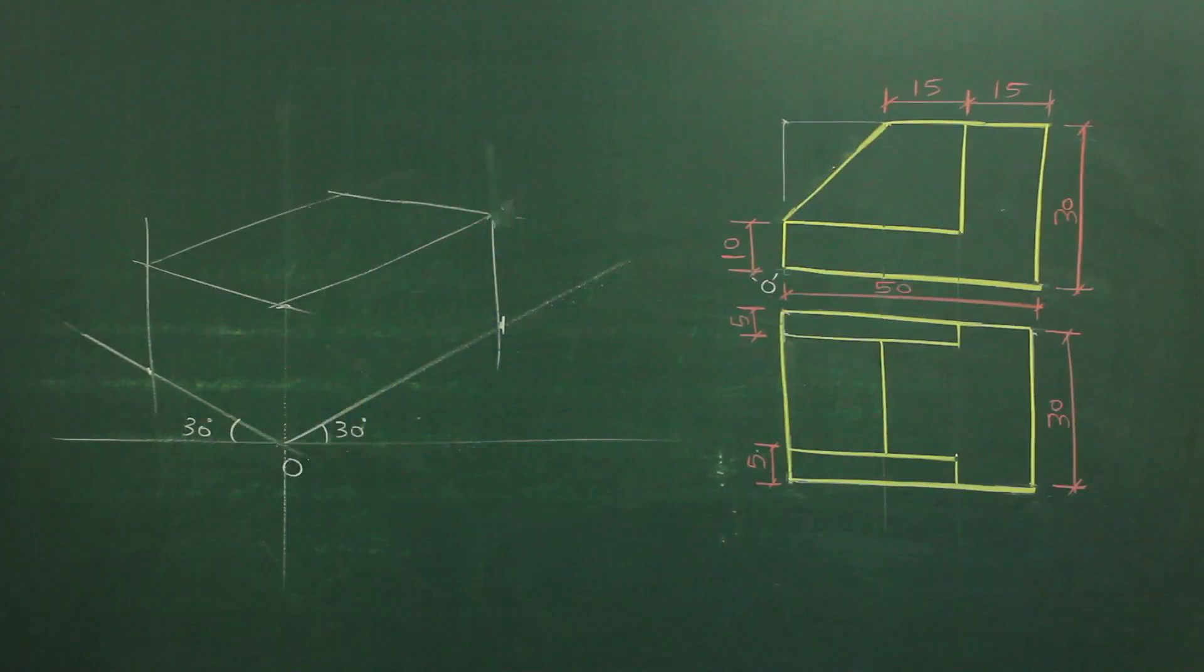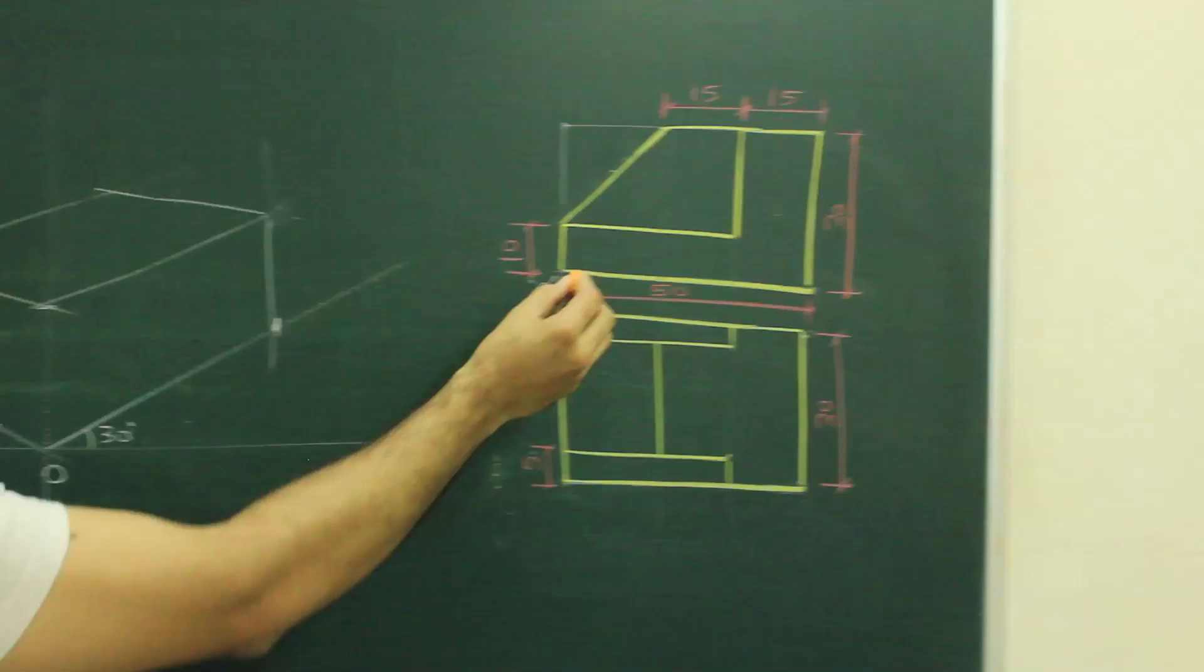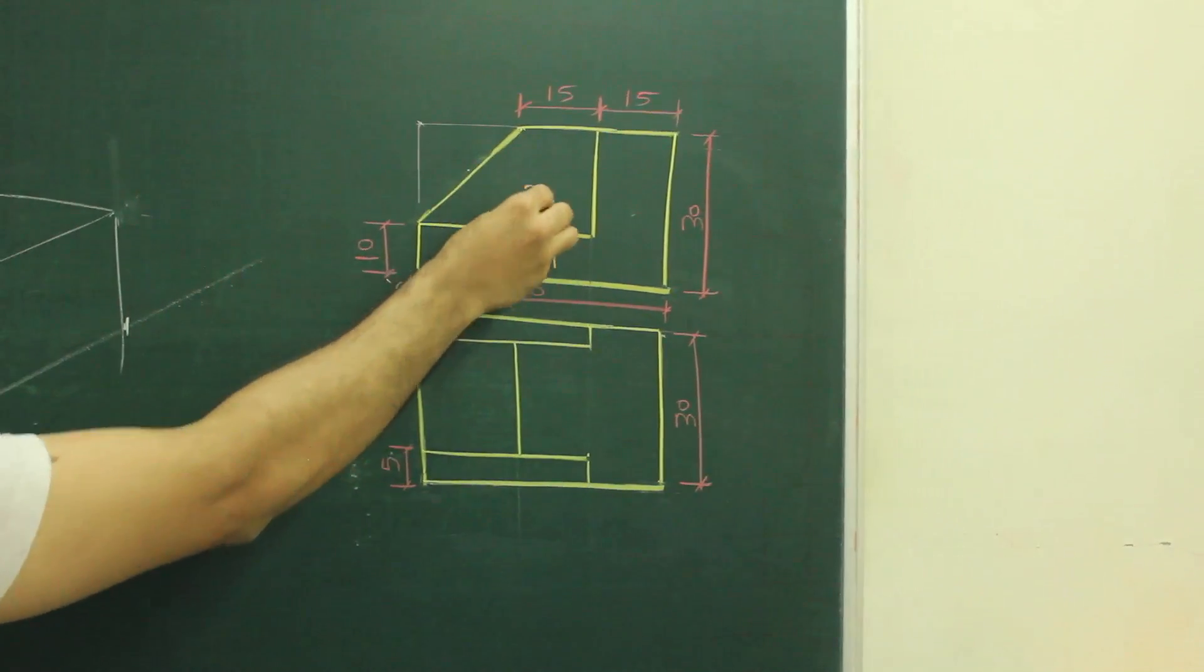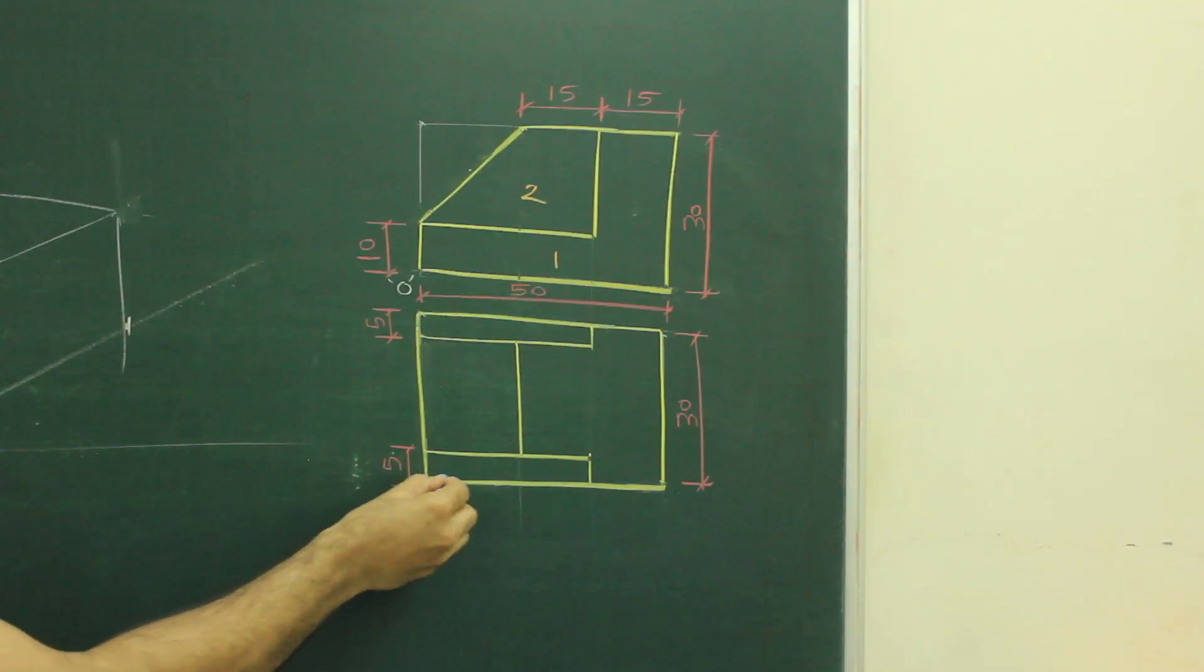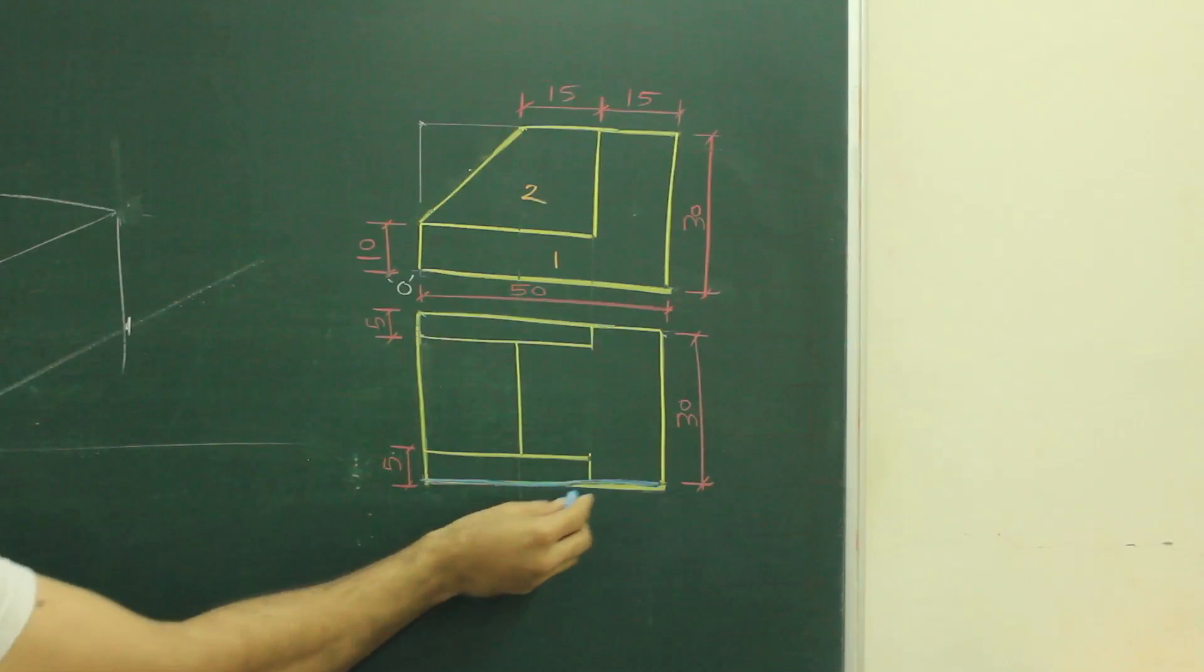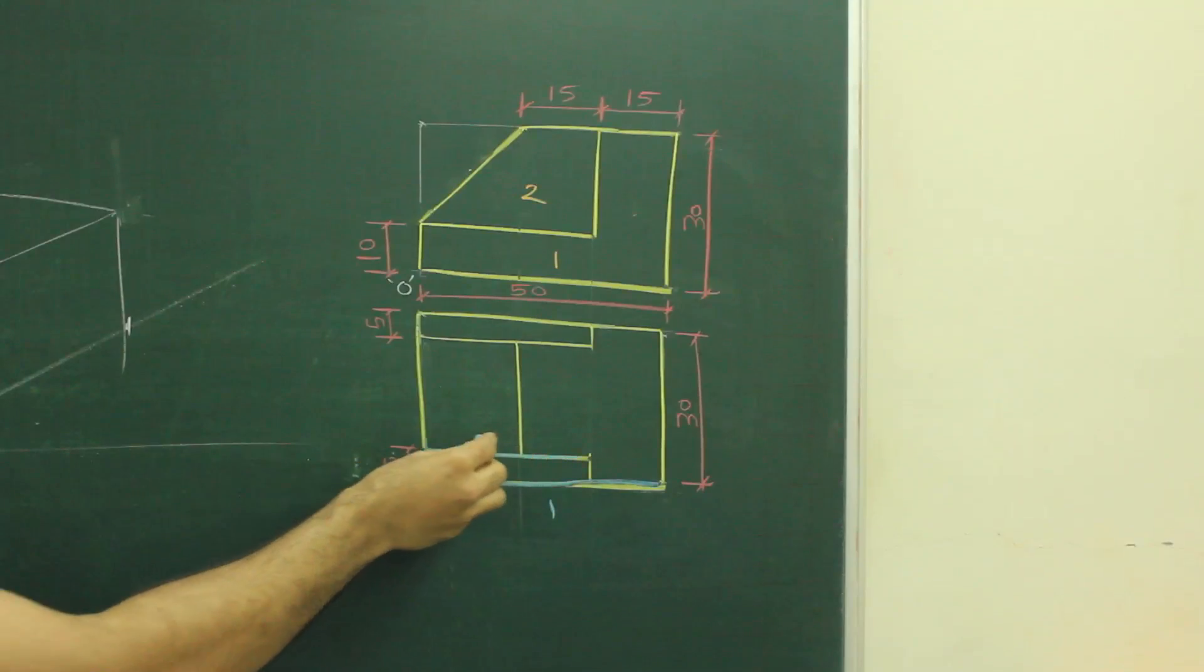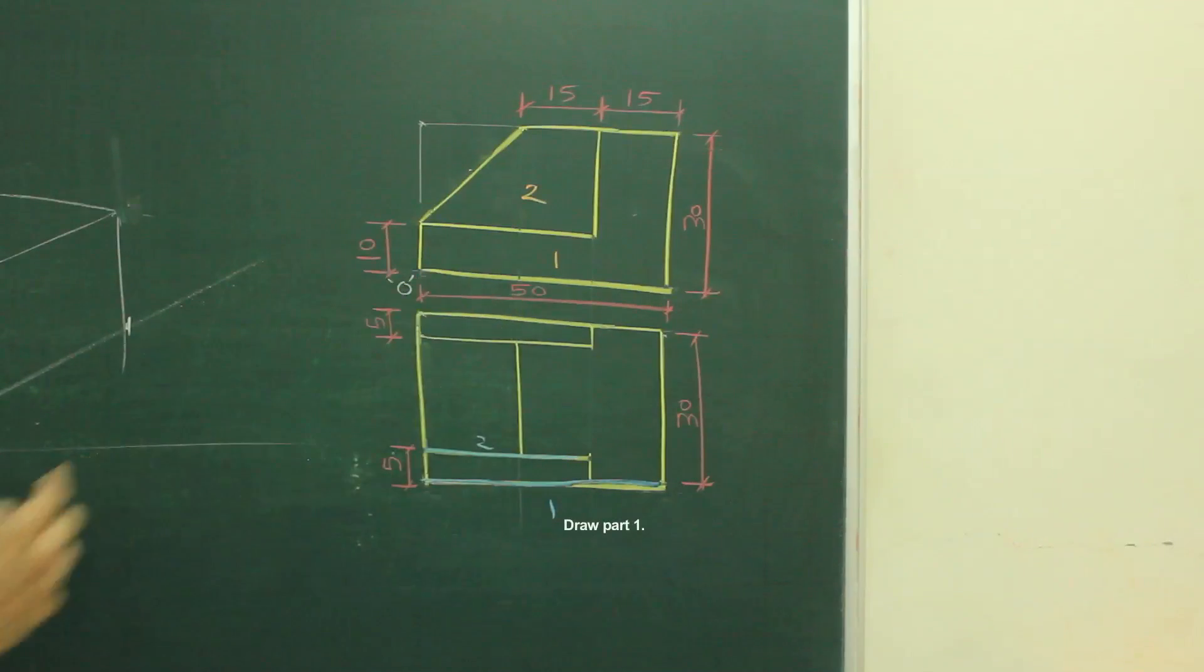Now after this, if you see the main diagram, there are two parts. Part 1, part 2. So out of this part 1 and 2, which one is nearer to you or which one is nearer to the observer is part 1. This is part 2, which is behind. So first we will draw part 1.